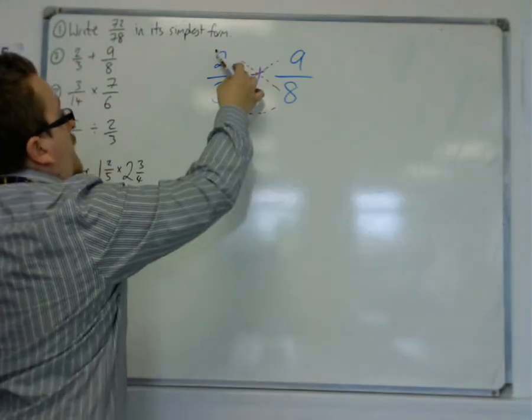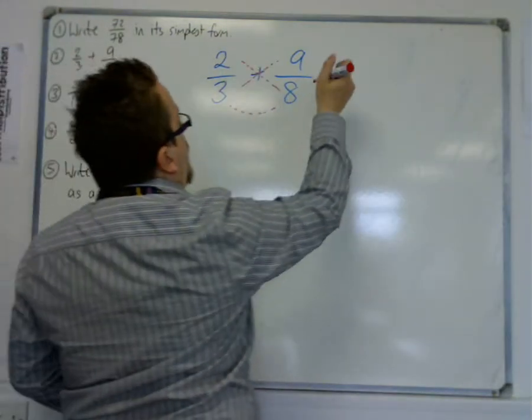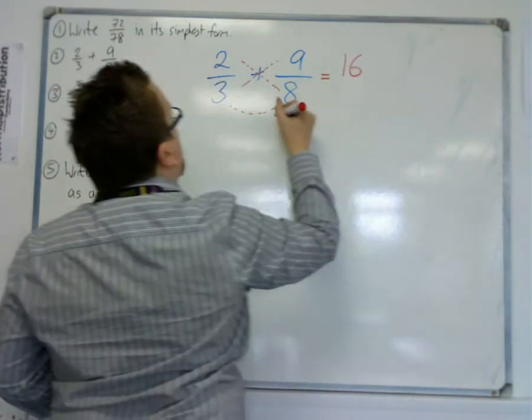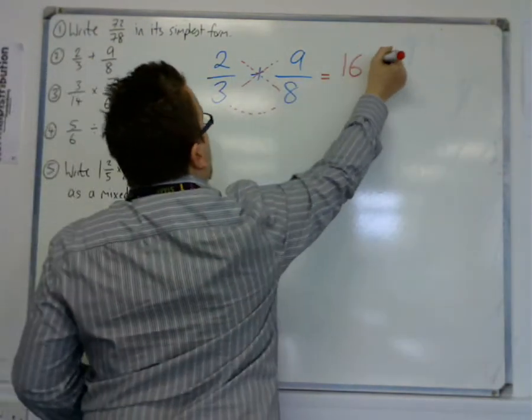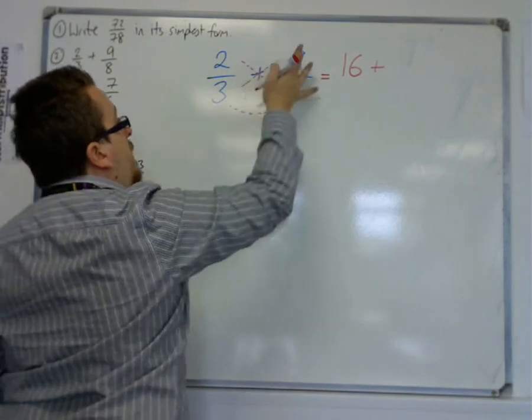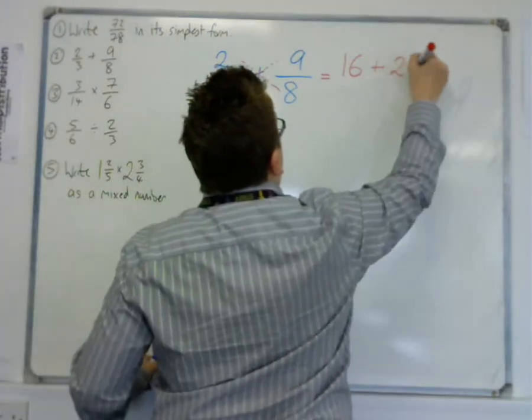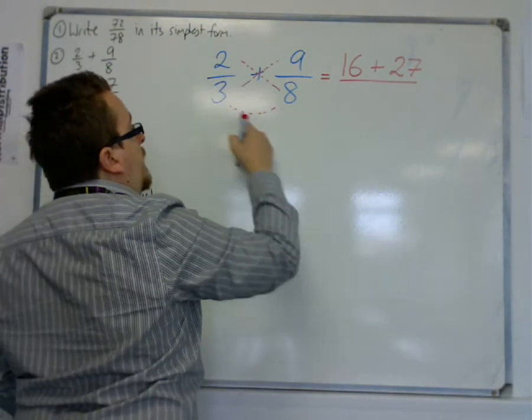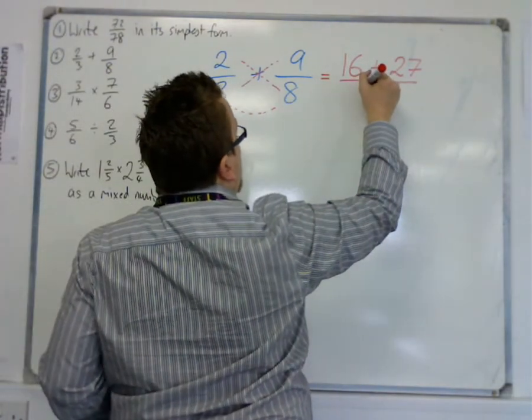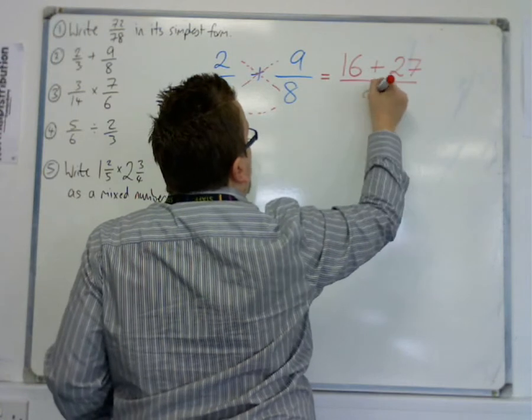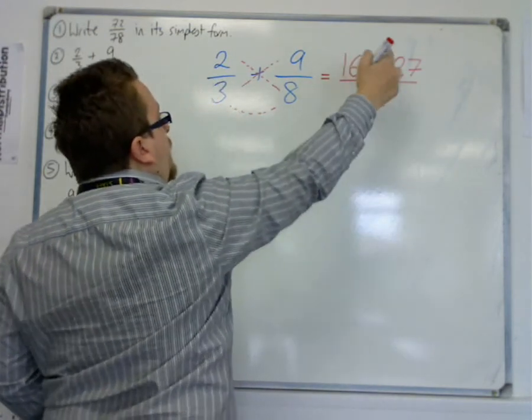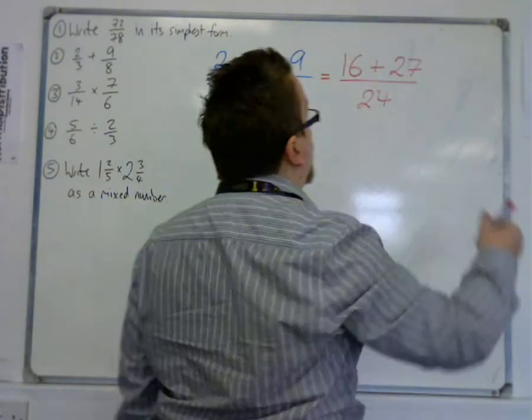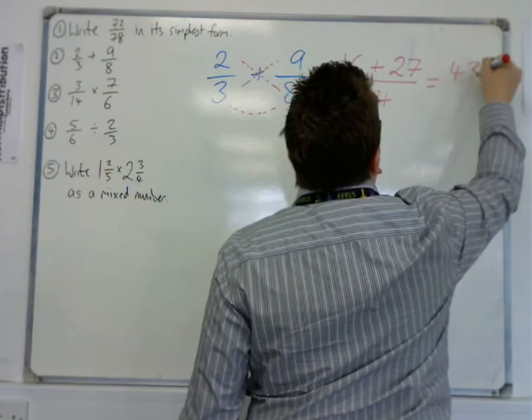First of all, it starts in the top left and down to the bottom right. So we have 2 times 8 makes 16. Then we have add plus 3 times 9, which makes 27, and divide that by 3 times 8. The two bottoms multiply together. So 3 eighths are 24. So you have 16 plus 27 is 43. 43 over 24. And that's it.